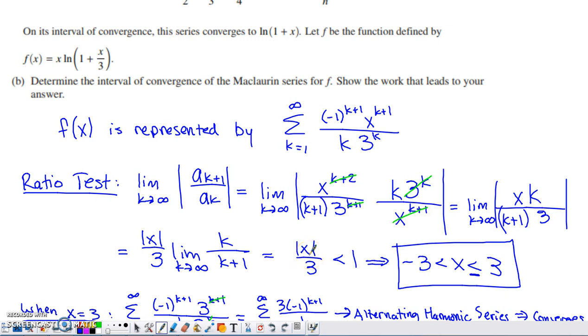Now what the ratio test says is you converge when this limit is less than 1, you diverge if it's greater than 1, but you are inconclusive if the limit equals 1. So I needed to set this to be less than 1 in order to find my interval of convergence. If I multiply by 3 on the right-hand side of the inequality, I get the absolute value of x is less than 3. That's going to be true as long as x is between negative 3 and 3.